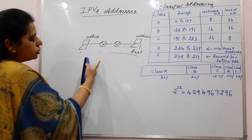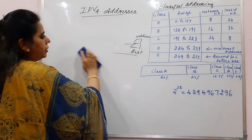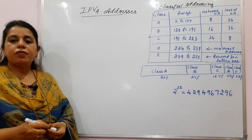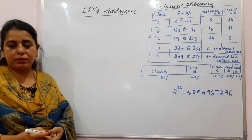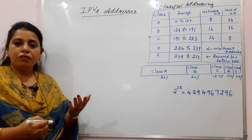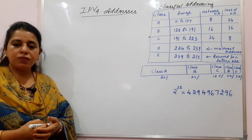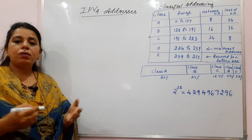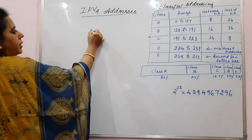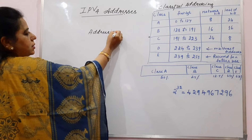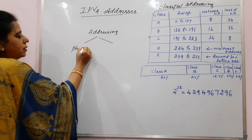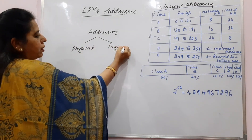The source address and destination address included in the packet are called IP addresses, and if the version is 4, we call them IPv4 addresses. Currently about 20% of devices are on IPv6 as well. In general, the addressing system always has two different types: one is the physical address and another is the logical address.